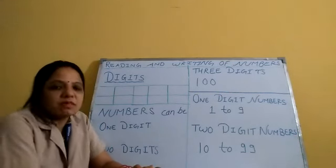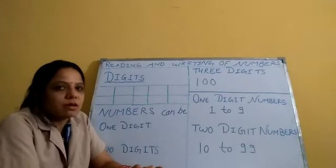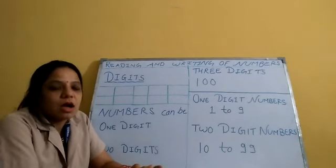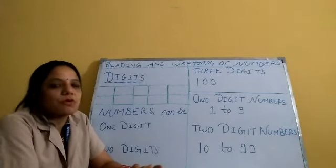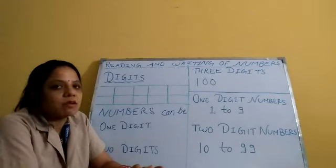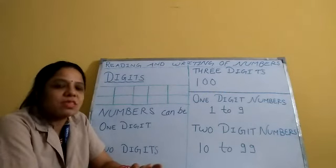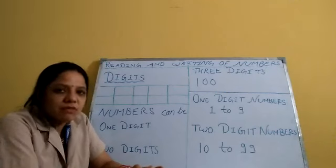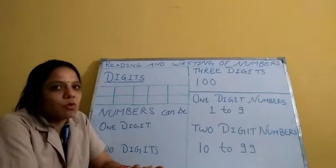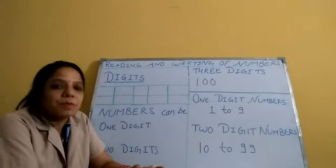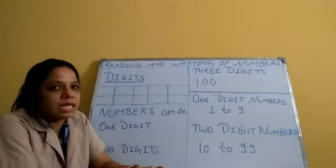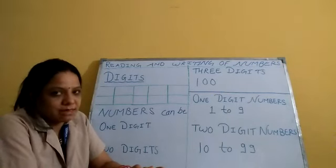In the previous class, you have learnt numbers 1 to 100 — how you tell the number, how you write the number — you have learnt very well. Now in this class, you will learn more numbers, the larger numbers. But first, let's recall the numbers 1 to 100 again with some new things.